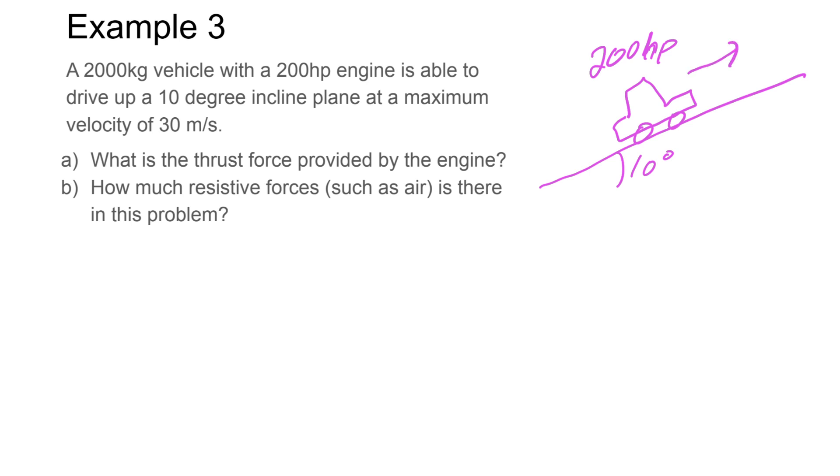We're going up the hill at a speed, maximum again at 30 meters per second. You can imagine if we were going slower, we wouldn't be using, your foot wouldn't be fully pressed down on the gas pedal or accelerator. The first question we're looking for is what is the thrust provided by the engine?